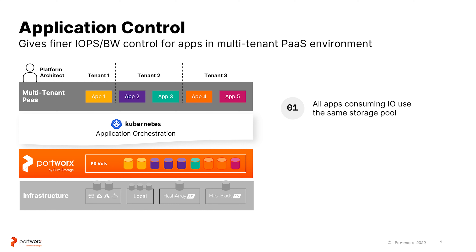Application Control gives platform architects finer-grained control over IOPS or bandwidth limits for applications running in a multi-tenant environment. Whenever we are running multiple applications on a single Kubernetes cluster running Portworks, all of those applications are consuming storage and storage resources.